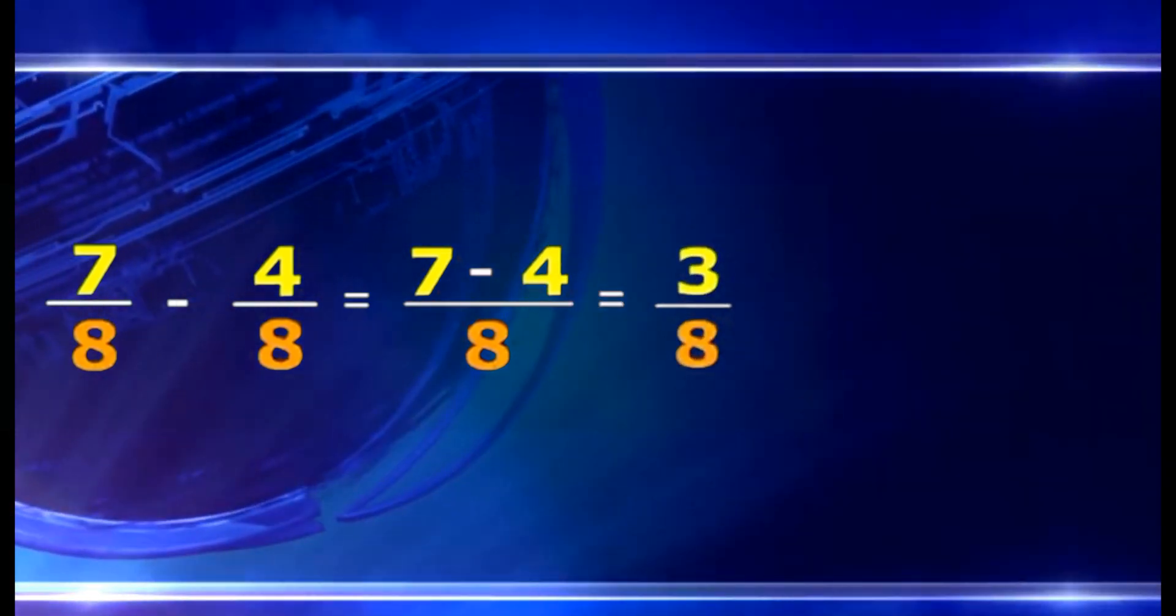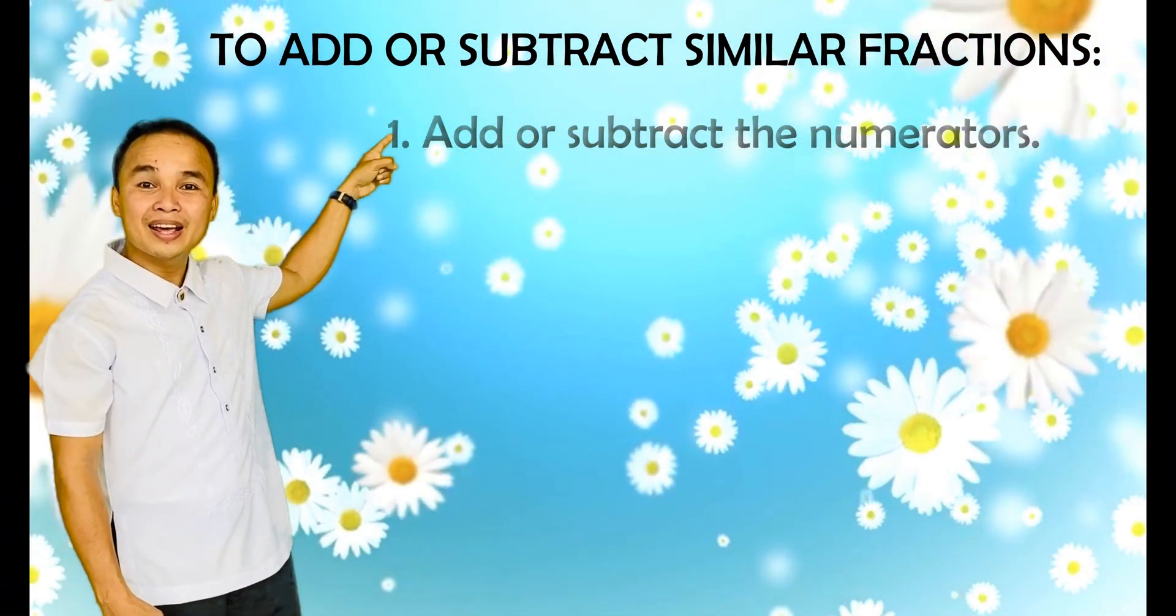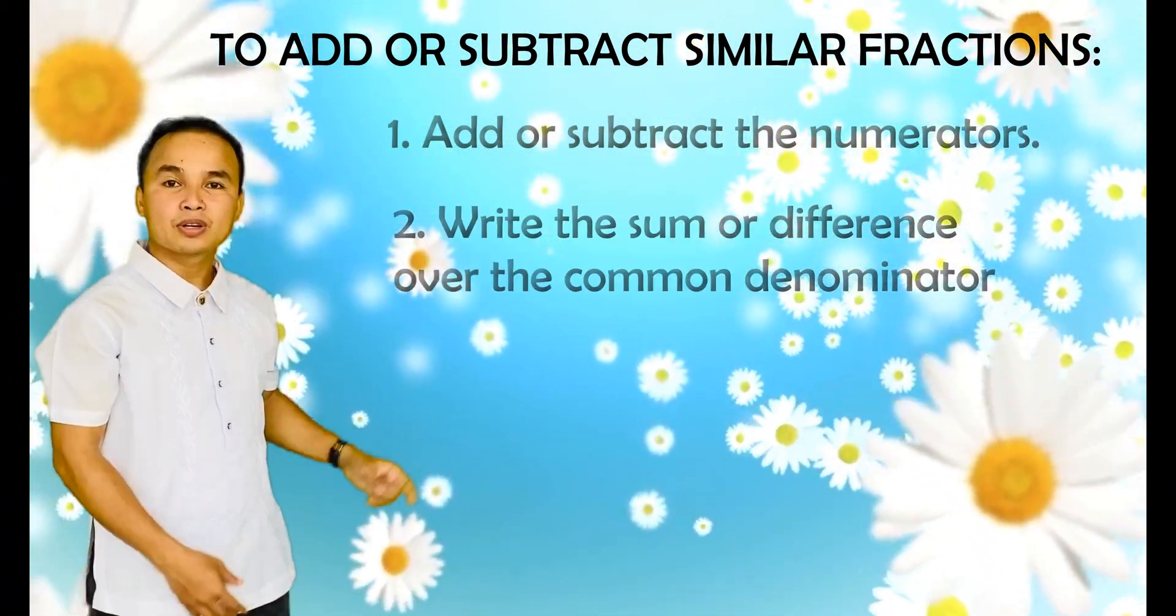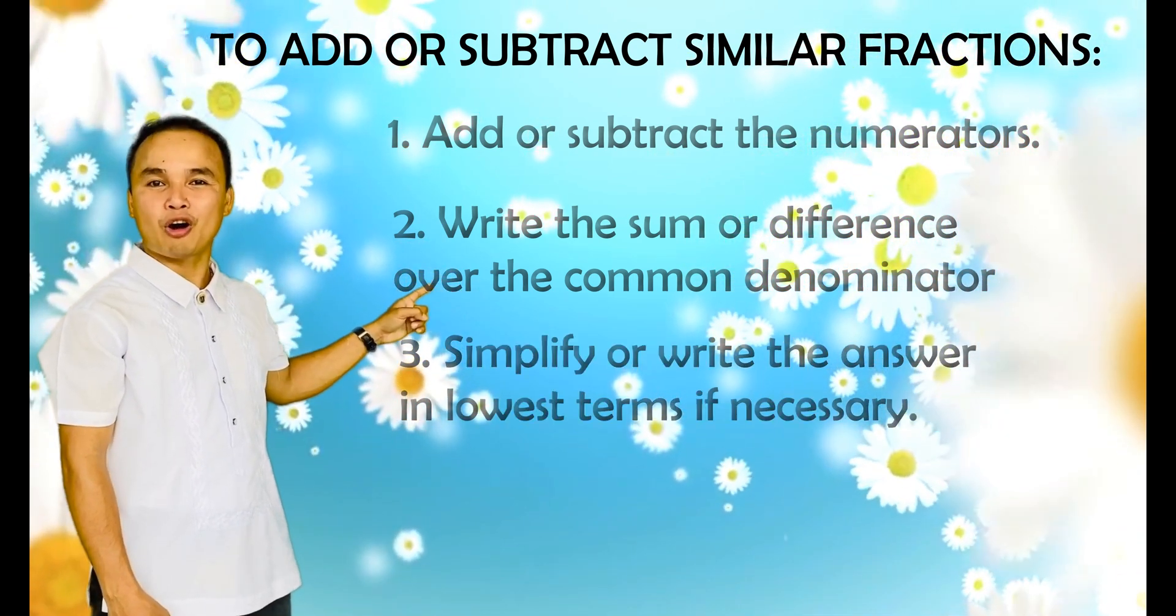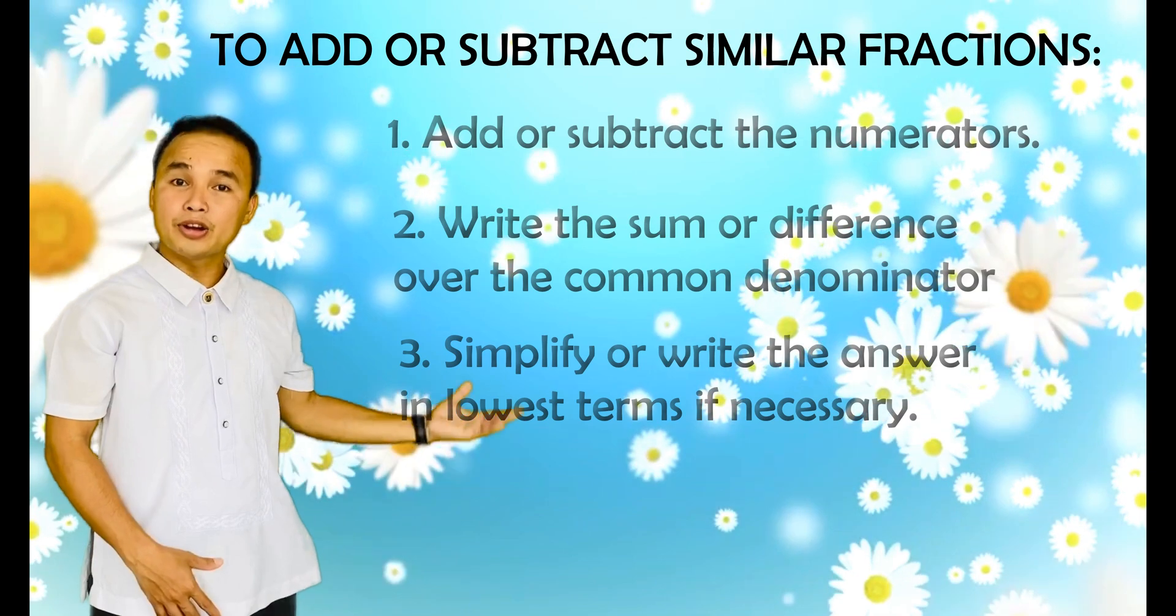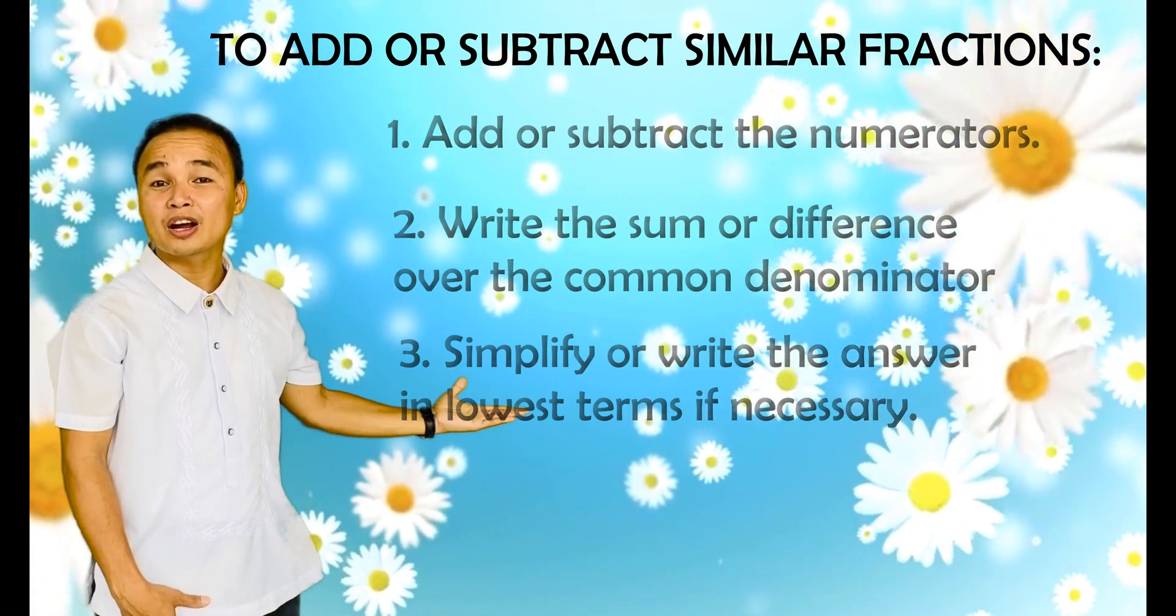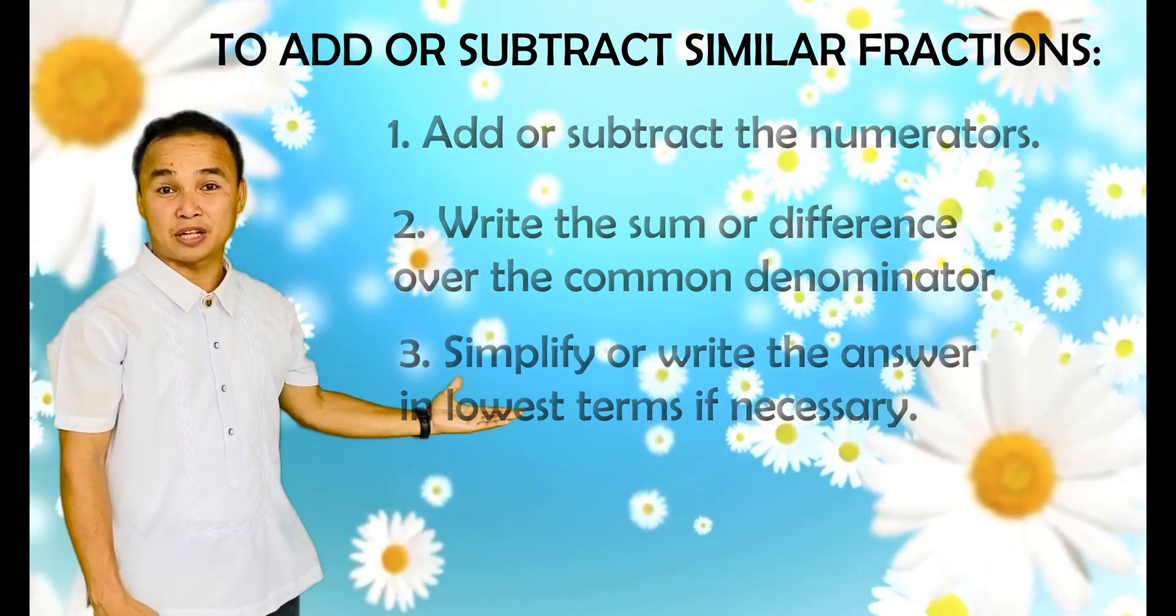To add or subtract similar fractions, you need the following steps. 1. Add or subtract the numerators. 2. Write the sum or difference over the common denominator. And number 3. Simplify or write the lowest terms if necessary.